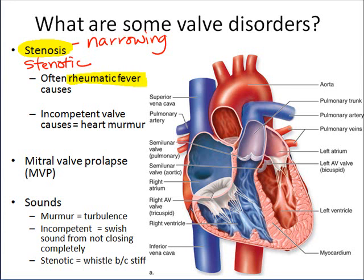Rheumatic fever occurs when a person is infected with a type of streptococcus bacterium. The person's own immune system manufactures antibodies that attack not only the bacterium but also the heart valves — particularly the AV valves. This produces inflammation of the valves, which then become scarred, the opening narrows, we have stenosis, and the heart has to work harder.